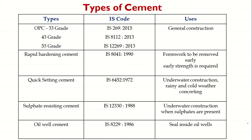Ordinary Portland Cement is the most widely used type of cement, suitable for all general concrete constructions. It is the most widely produced and used cement all around the world, with global annual production of nearly 3.8 million cubic meters. It is generally suitable for all construction purposes.